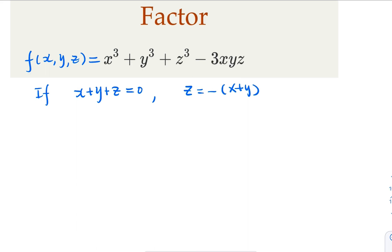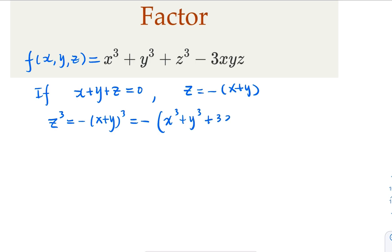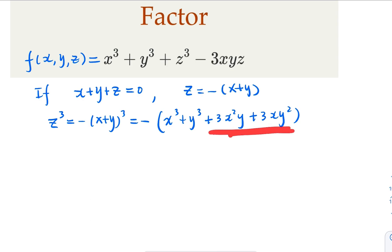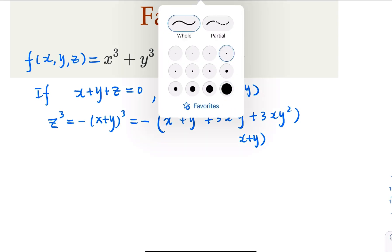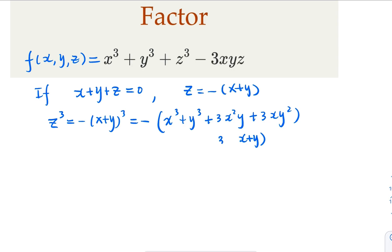So we're going to use the cubic formula here. x plus y cubed is going to equal x cubed plus y cubed plus 3x squared y plus 3xy squared. Notice that in most cases you can rewrite this as x cubed plus y cubed plus 3xy times x plus y.